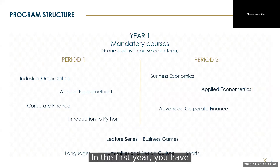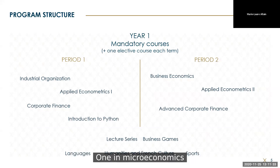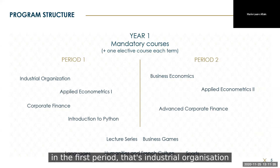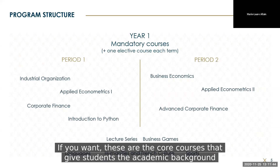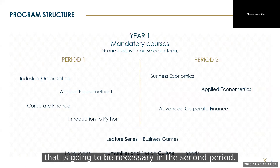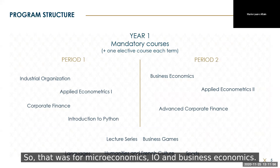In the first year, you have three mandatory courses each term, one in microeconomics. In the first period, that's industrial organization. In the second period, it's business economics. The first period gives students the academic background that's going to be necessary in the second period — so that's microeconomics, I.O., and business economics.